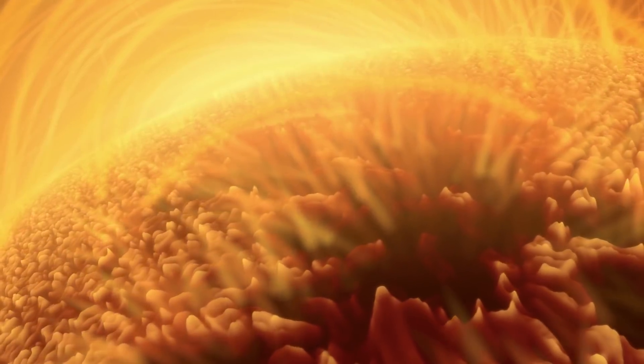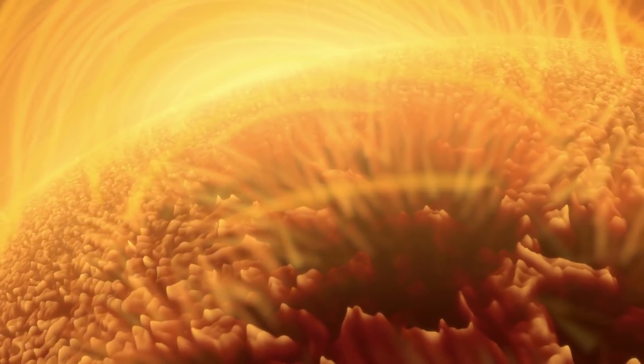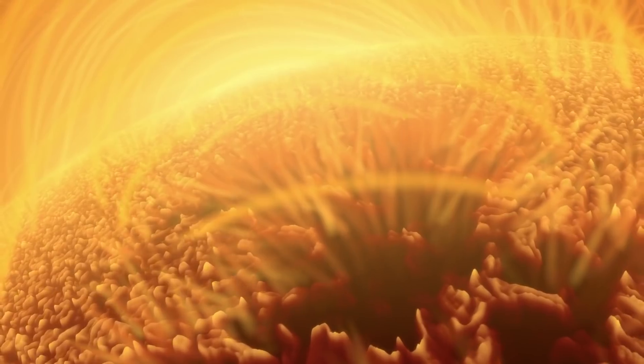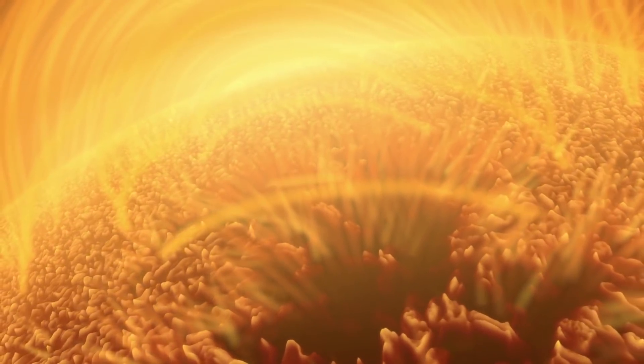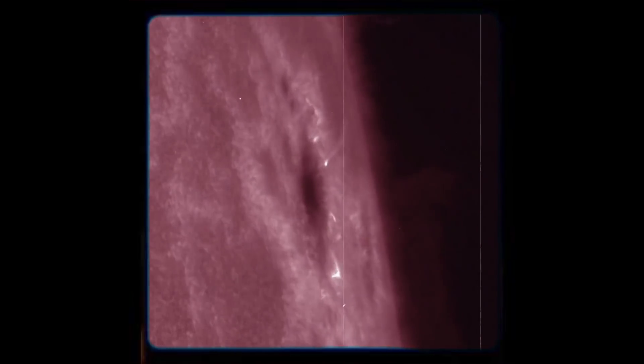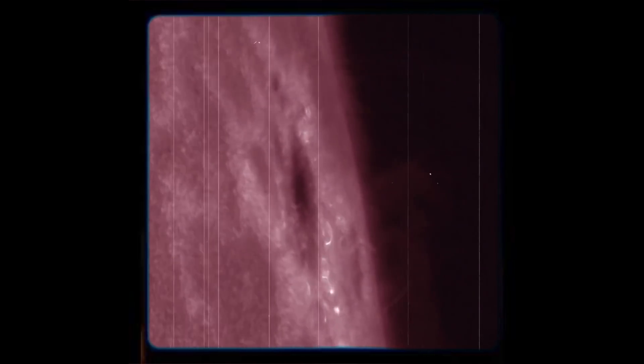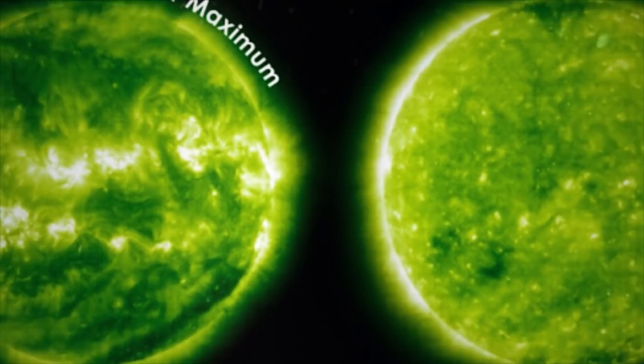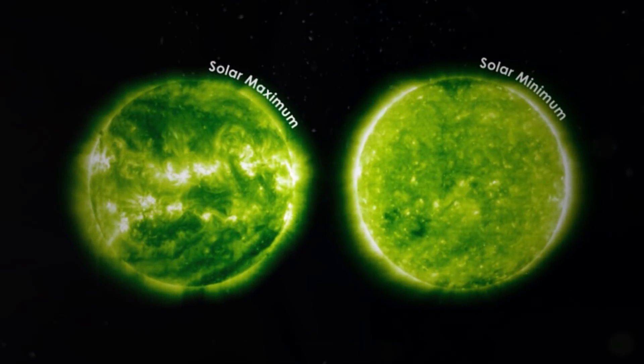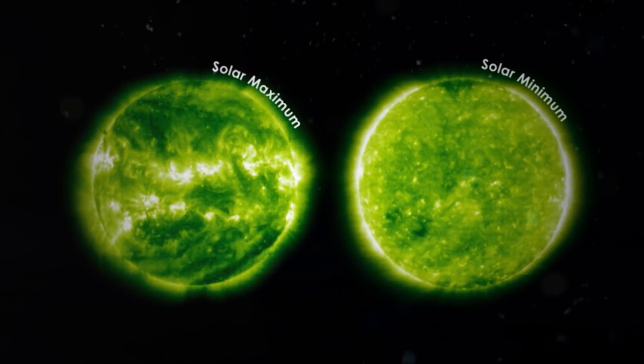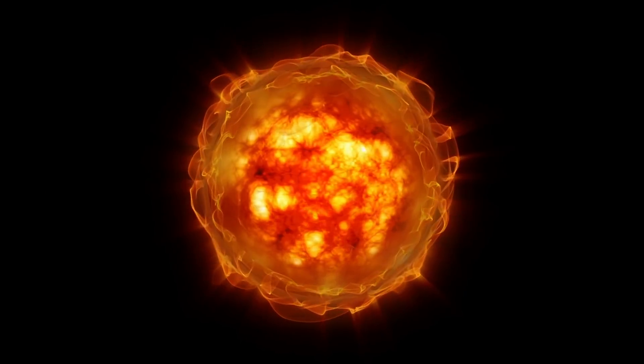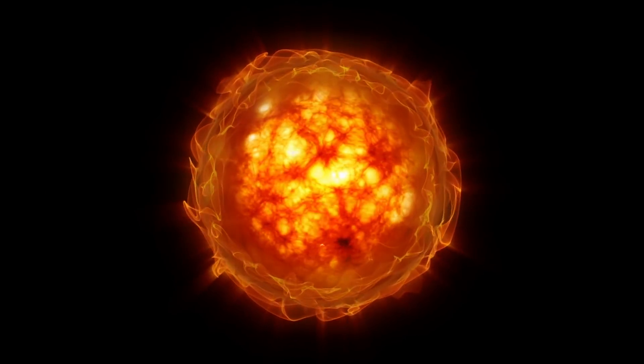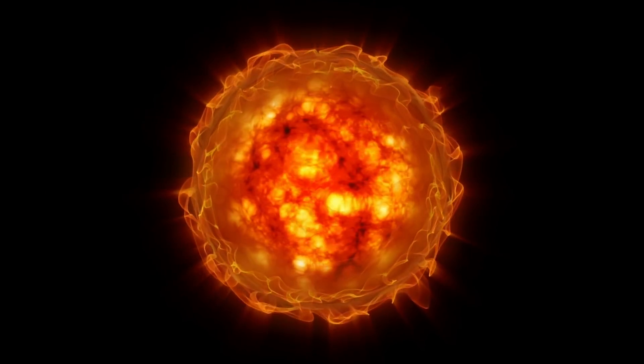A coronal hole is a hole in the Sun that isn't truly a hole. It's a significantly colder zone in the plasma aura that surrounds the Sun. These areas look black in X-ray and extreme ultraviolet imaging. Coronal holes are most common when the Sun exits solar maximum, the most active time of the Sun's 11-year activity cycle, when sunspots and flares are at their highest.